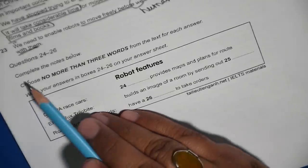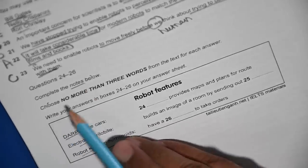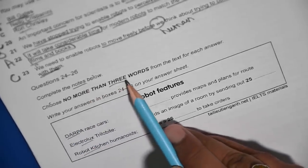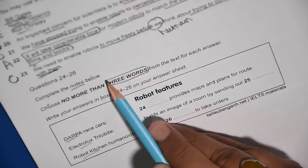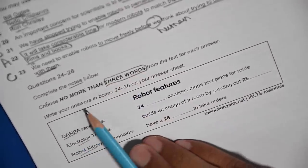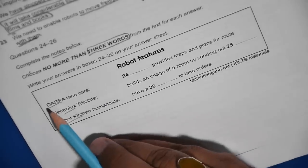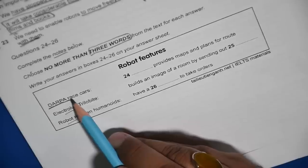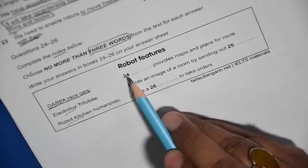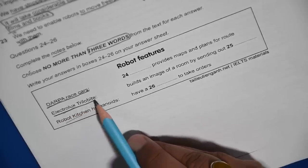Now we go on with complete the notes below. Choose no more than three words. No more than three words means one word or two words or three words, all right. Write your answers. Now we are already familiar, if you remember at one point I encircled Debra car race, so one question is about Debra car race, then Electrolux trilobite.